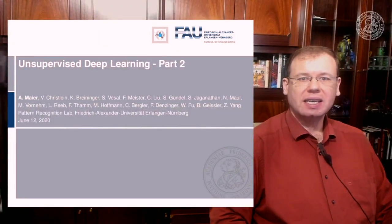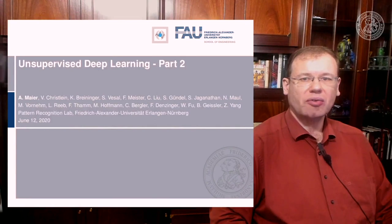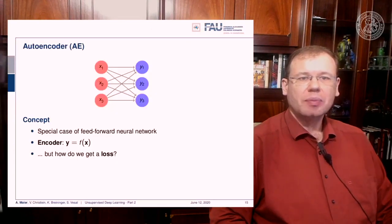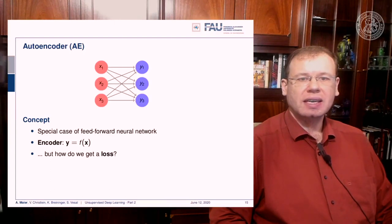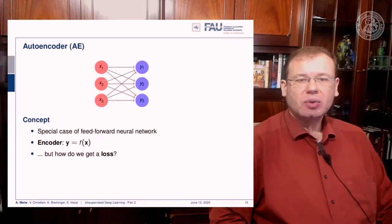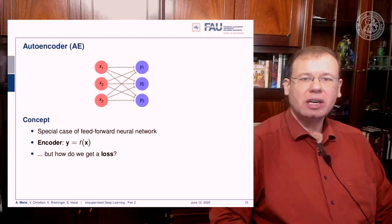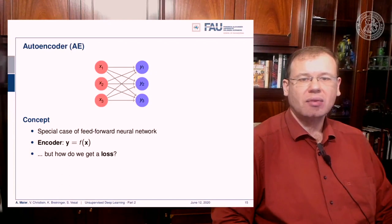Okay, so here are our slides, part two of our lecture. The topic is autoencoders. The concept of the autoencoder is that we want to use the ideas of feed-forward neural networks, and you could say that a feed-forward neural network is a function of x that produces some encoding y.